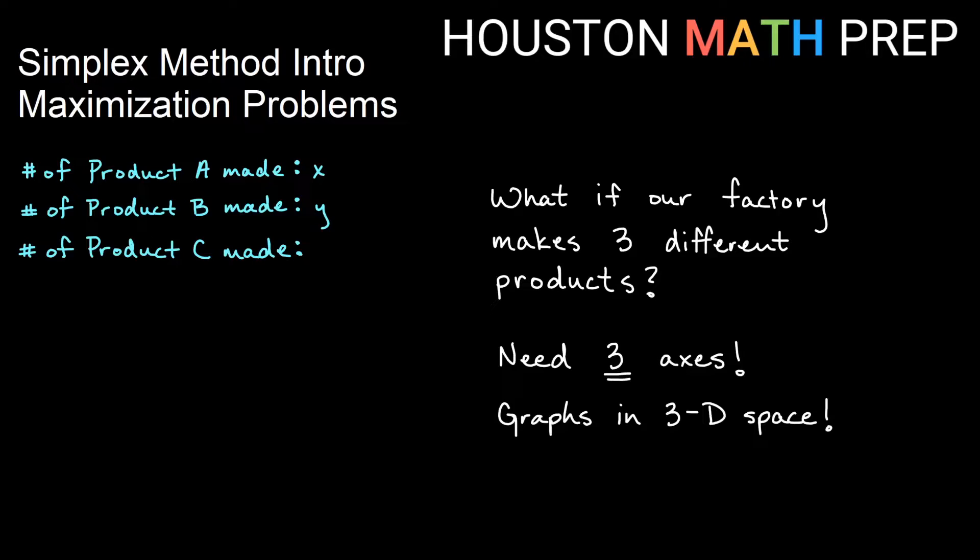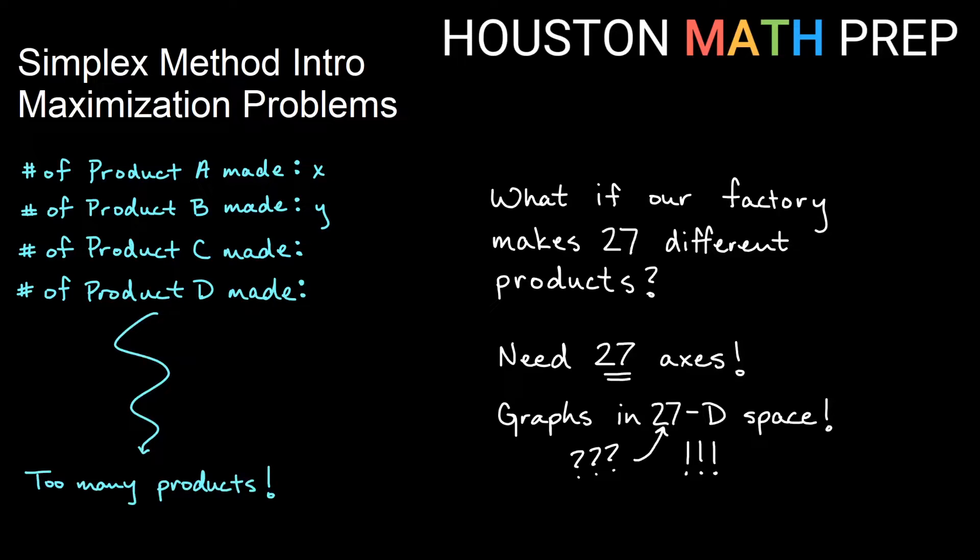Three-dimensional space is great. It's what we walk around in. It's what we brush our teeth in. Graphing on it is really difficult, right? Three-dimensional space comes off the page. The page is only two dimensional space. Graphing becomes difficult. What if we make a fourth product? Then we need four axes. We'd have to graph in four-dimensional space. What does that even look like? It's really hard to picture. It's hard to imagine what that would be like. If we make 27 products, we would have to graph in 27 dimensional space. And we don't even have enough letters in the alphabet to assign variables to all the products, right?